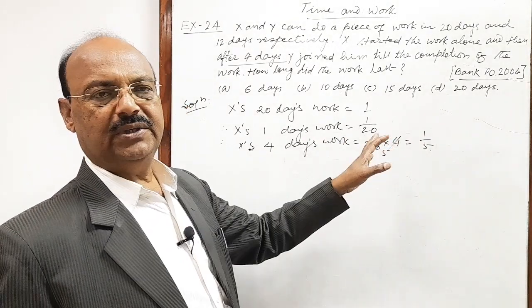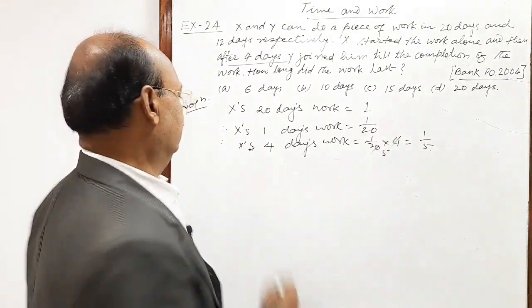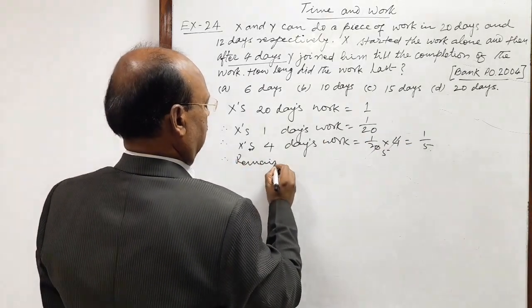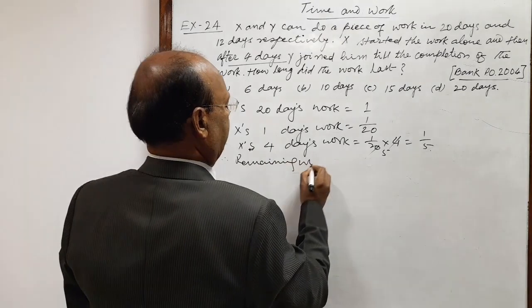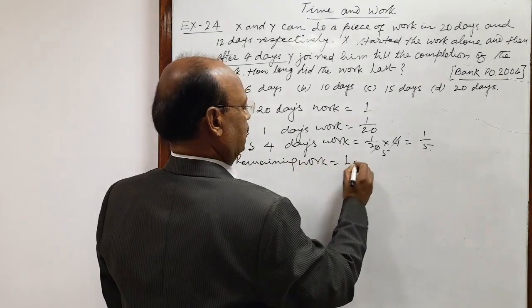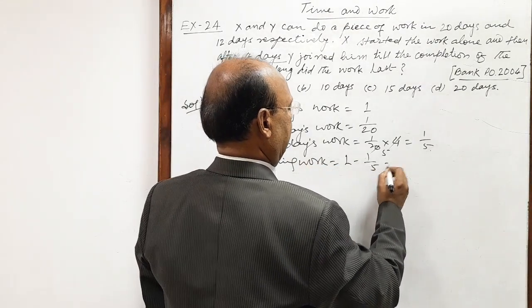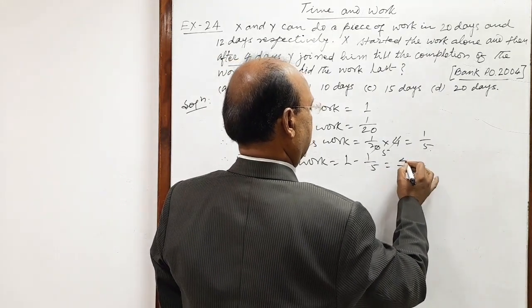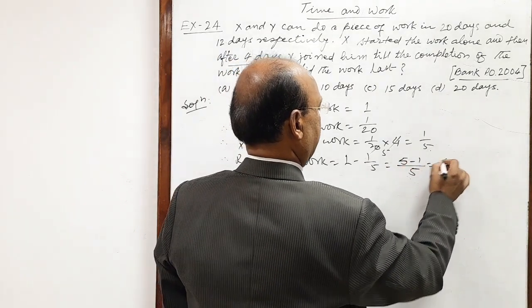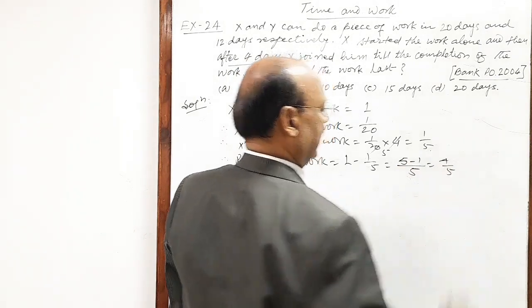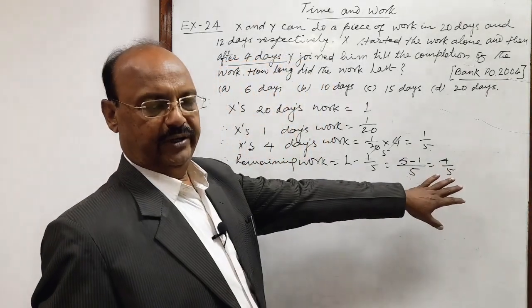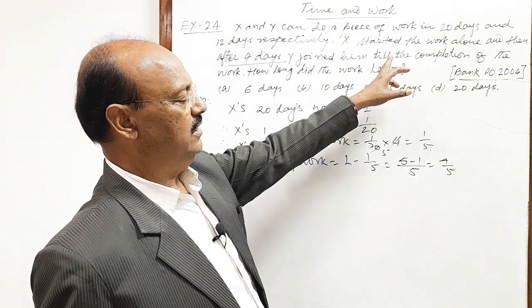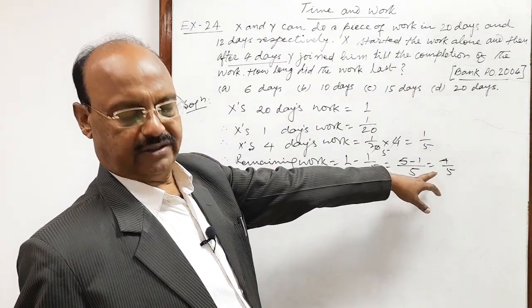So remaining work is: 1 minus 1/5. Therefore, remaining work is equal to 1 − 1/5 = 4/5. So 4/5 of the work is now remaining, and at this stage Y joins X.